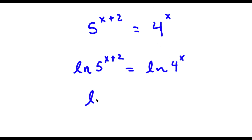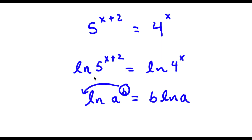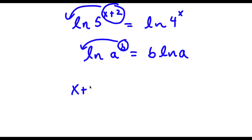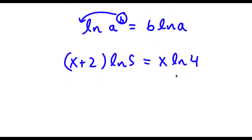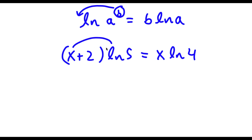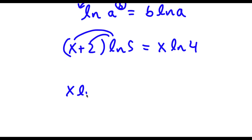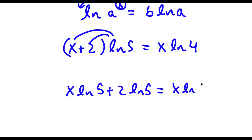Now if I have something in the form ln a to the power of b, I can move this exponent b to the front, so this equals b times ln a. So for ln 5 to the power of x plus 2, I can move x plus 2 to the front, giving x plus 2 times ln 5. For ln 4 to the power of x, I move x to the front giving x times ln 4. If I distribute ln 5 with x plus 2, I get x times ln 5 plus 2 times ln 5 is equal to x times ln 4.